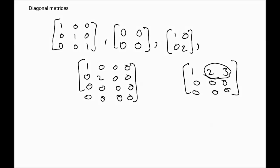A diagonal matrix is a matrix that has nonzero entries only on the main diagonal. As you can see in these examples, the only nonzero entries are on the diagonal — everything off the diagonal is zero. The off-diagonal entries are zero above and below, so a matrix where the diagonal entries are the only positions that can possibly have nonzero values is considered a diagonal matrix.